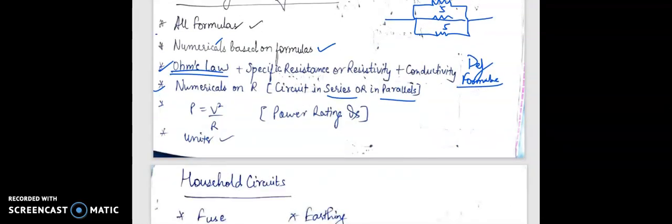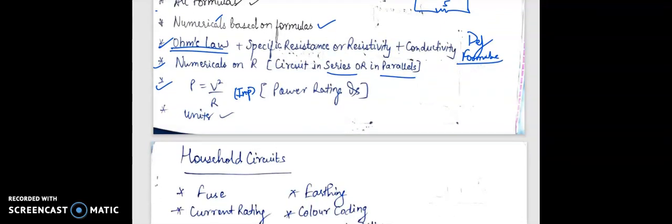Then power rating questions - P is equal to V squared by R, which is again an important formula. The units.